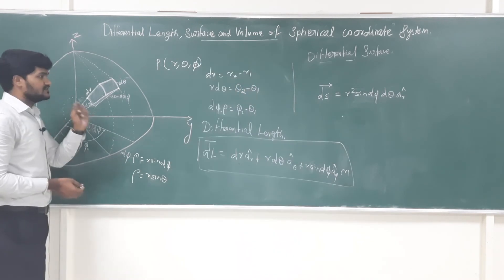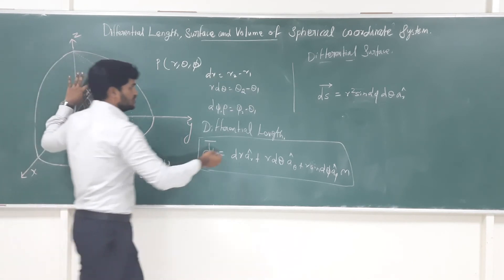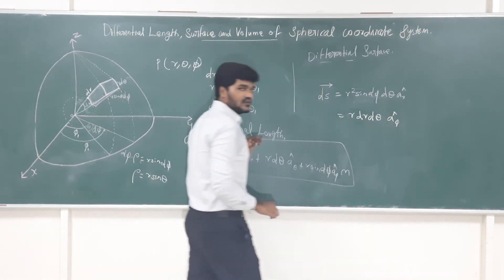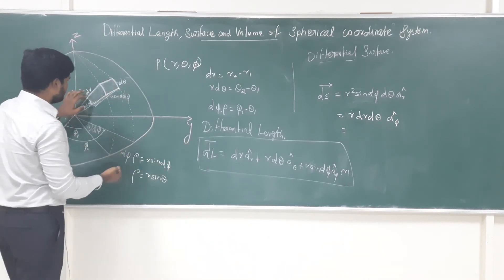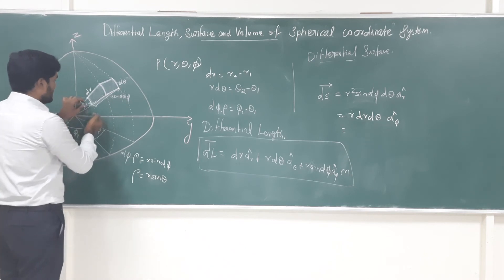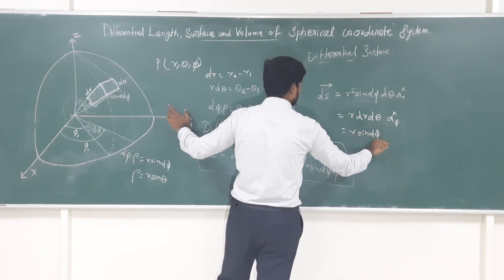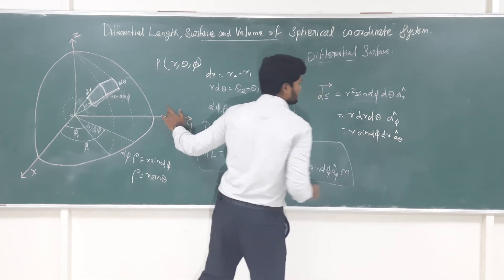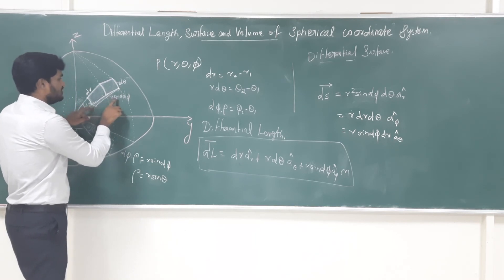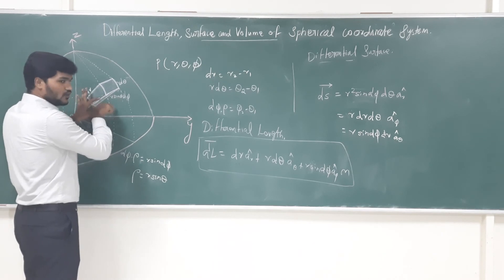Similarly for the other faces: if you take this side portion, one value is dr and the other is r·dθ, giving dS = r·dr·dθ in the aφ̂ direction. For the next side, taking this portion, one value is r·sinθ·dφ and the other is dr, giving dS = r·sinθ·dφ·dr in the aθ̂ direction.